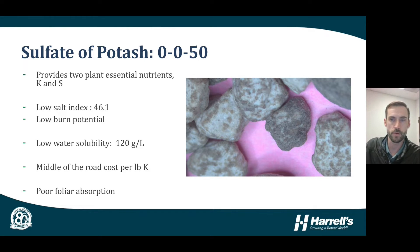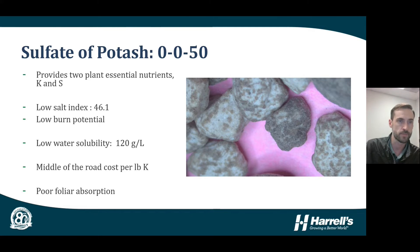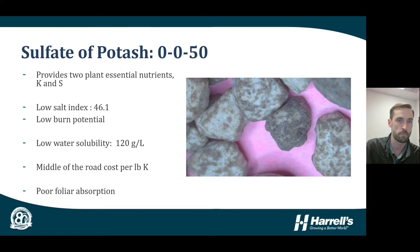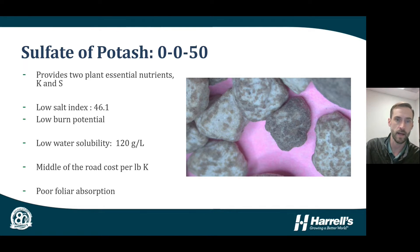Next is Sulfate of Potash (SOP), with a typical analysis of 0-0-50. A major benefit of SOP over MOP is that it provides two plant-essential nutrients: potassium and sulfur. SOP also has a very low salt index of 46.1 compared to MOP's 116.3, meaning very low burn potential. It has low water solubility at 120 grams per liter, making it a poor option for foliar liquid applications since it does not dissolve readily in carrier water. SOP is a middle-of-the-road cost per pound of potassium and also has poor foliar absorption characteristics.